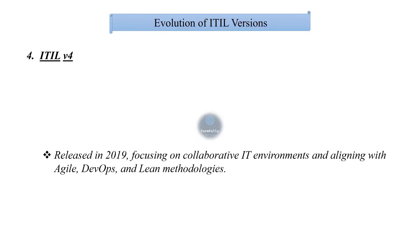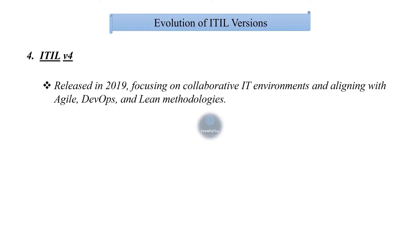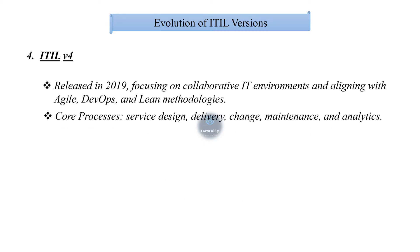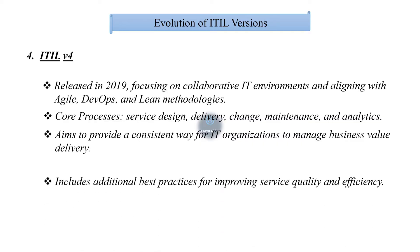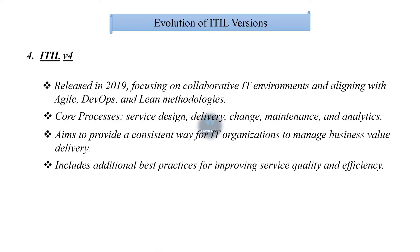The fourth version, ITIL v4, was released in 2019, focusing on collaborative IT management and aligning with Agile, DevOps, and Lean methodologies. Core processes are service design, delivery, change, maintenance, and analytics. It aims to provide a consistent way for IT organizations to manage business value delivery, and includes additional best practices for improving service quality and efficiency.